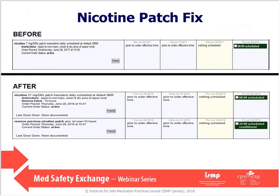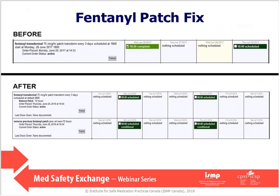These are examples of how patch orders look on the EMAR system before and after the fix. The top shows before, the bottom shows after. You can clearly see that the nicotine patch order previously had only a patch application order, whereas the fixed version now has both patch application and patch removal orders — showing the 14-hour patch removal timing. Similarly, the improved fentanyl order now also has both the patch application and patch removal orders.